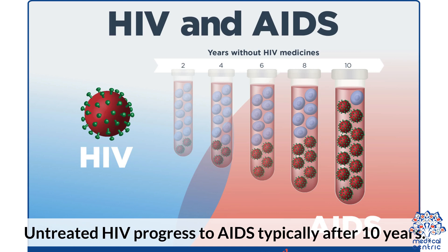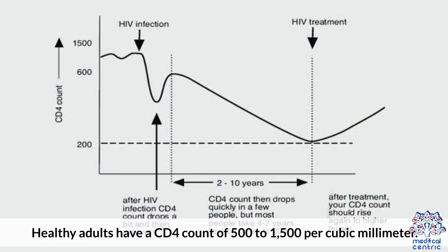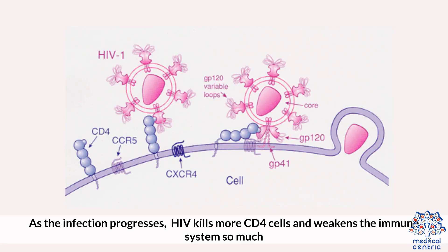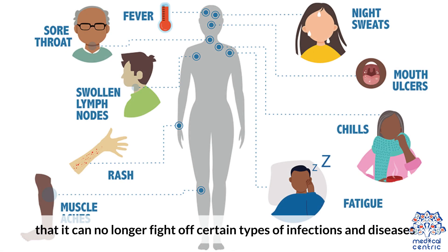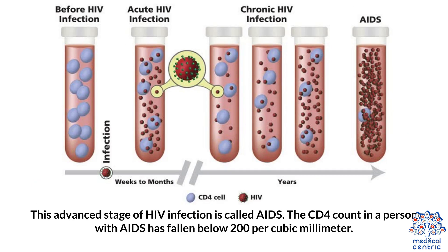Untreated HIV progresses to AIDS, typically after 10 years. Healthy adults have a CD4 count of 500 to 1500 per cubic millimeter. As the infection progresses, HIV kills more CD4 cells and weakens the immune system so much that it can no longer fight off certain types of infections and diseases. This advanced stage of HIV infection is called AIDS. The CD4 count in a person with AIDS has fallen below 200 per cubic millimeter.